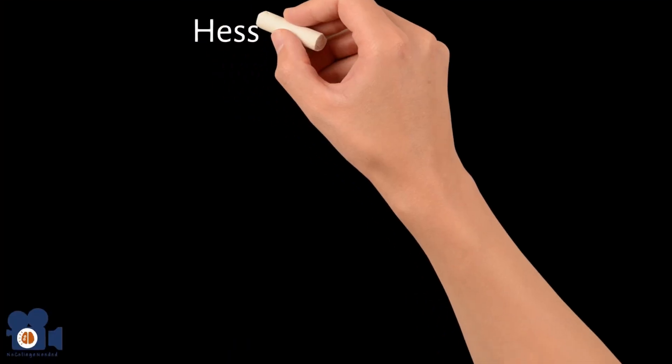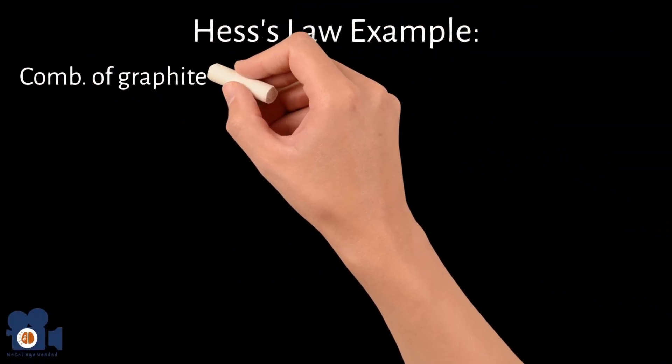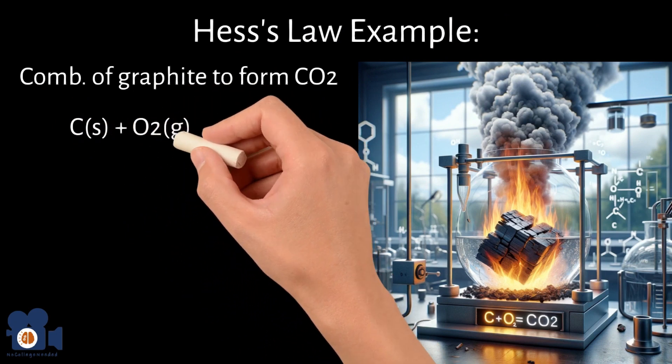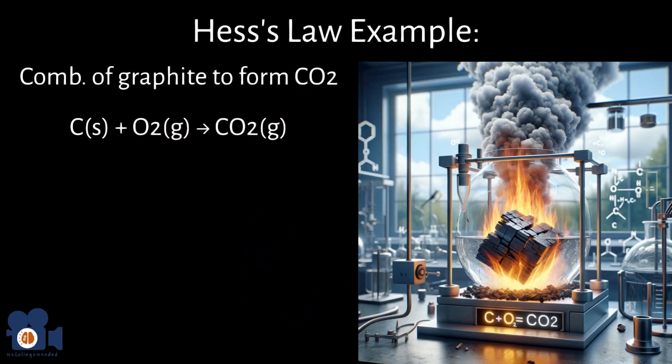An example of Hess's law is in the combustion of graphite to form carbon dioxide, C solid plus O2 gas going to CO2 gas. Direct measurement of this reaction's delta H might be challenging. However, if the delta H for the formation of carbon monoxide from C and the delta H for the oxidation of carbon monoxide to carbon dioxide are known, these reactions can be combined to represent the total overall reaction.